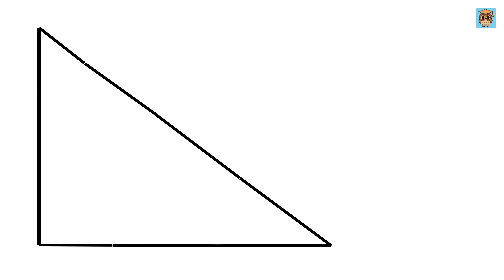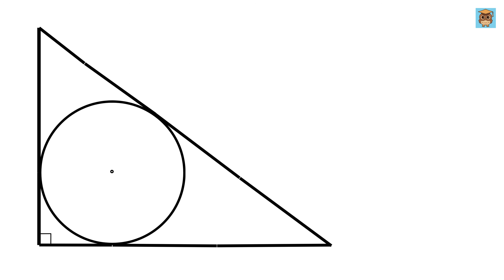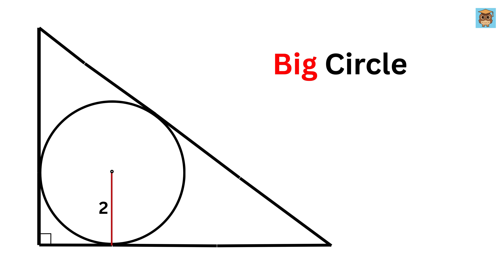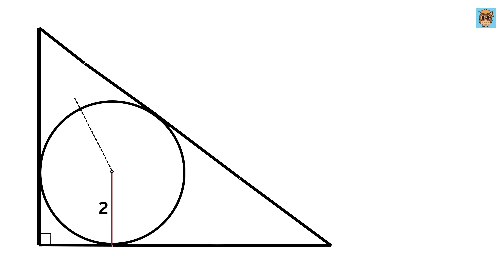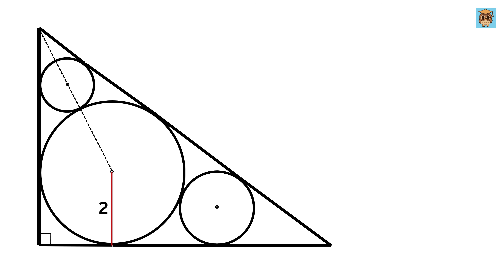We have a right-angled triangle whose angle is 90 degrees. We have a circle inscribed inside this triangle touching all three sides. The radius of this inscribed circle is two units — we will call it the big circle. Now draw a line that connects the center of this big circle with this vertex of the triangle.